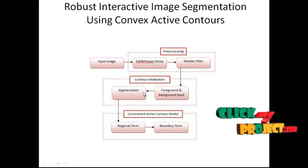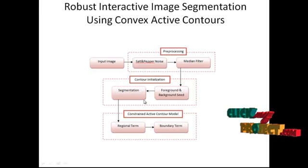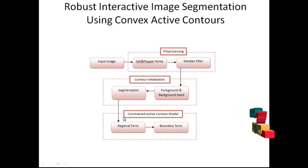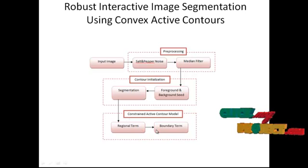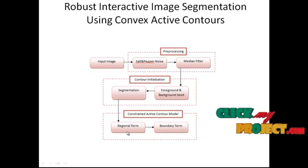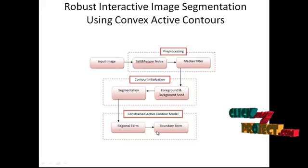From the user scribbles, we generate an initial contour using region-based segmentation, that is the pre-segmented output. In the next step, we formulate the regional term and boundary term. The alpha channel is computed based on these components, allowing us to paste the object onto a new background with no noticeable visual artifacts.